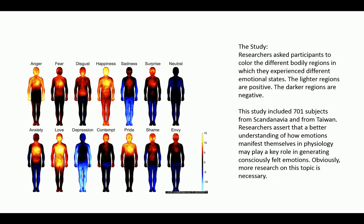More or less, the question was just where do you feel these different emotions. The correlations arrived at after those 701 people input their data was that we experience emotions basically in a manner consistent with this visual aid — we have a lot of either head or torso activity.